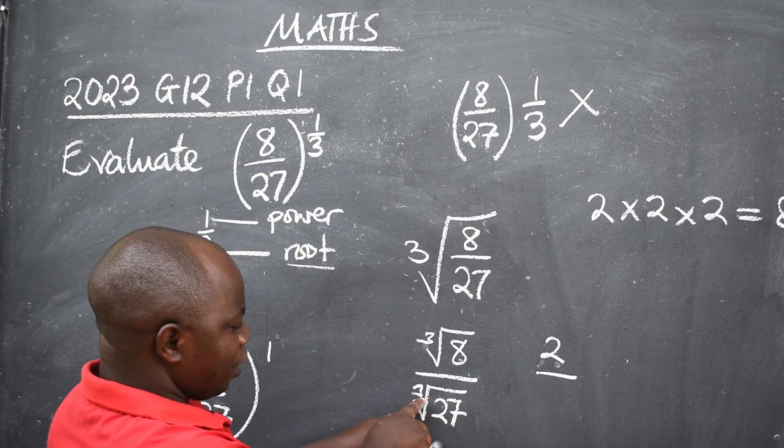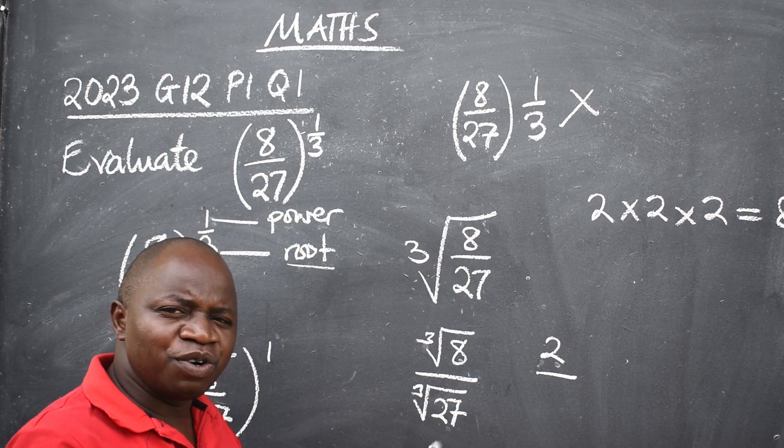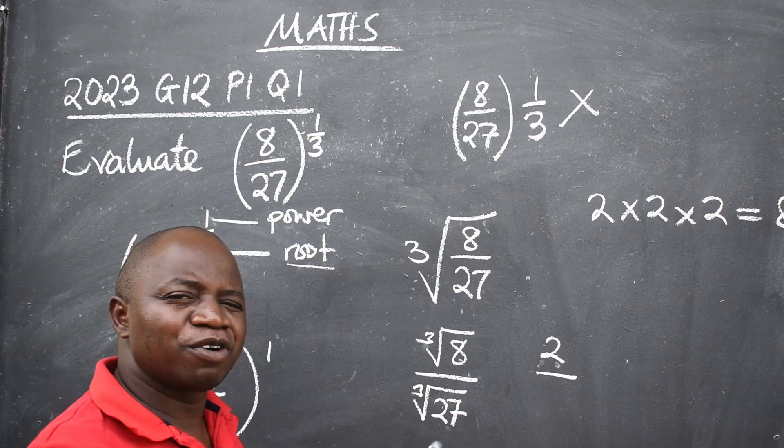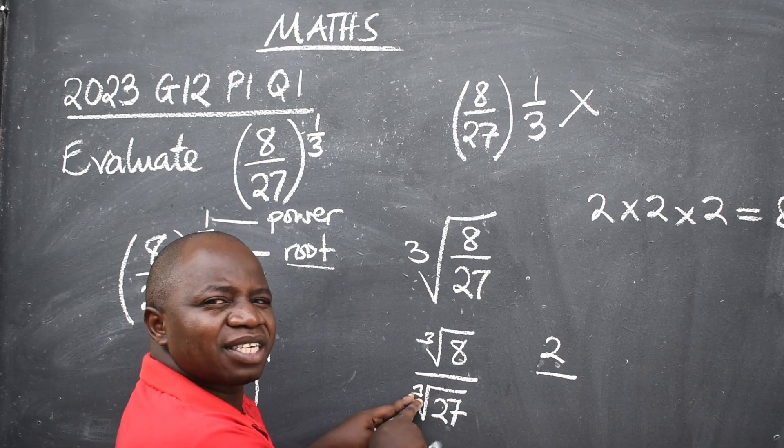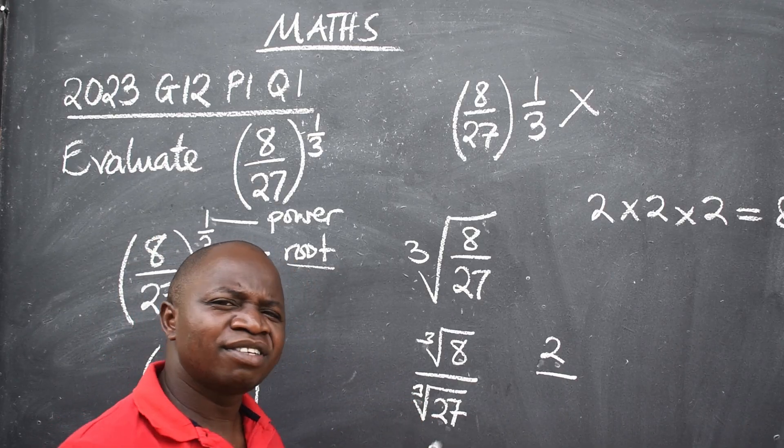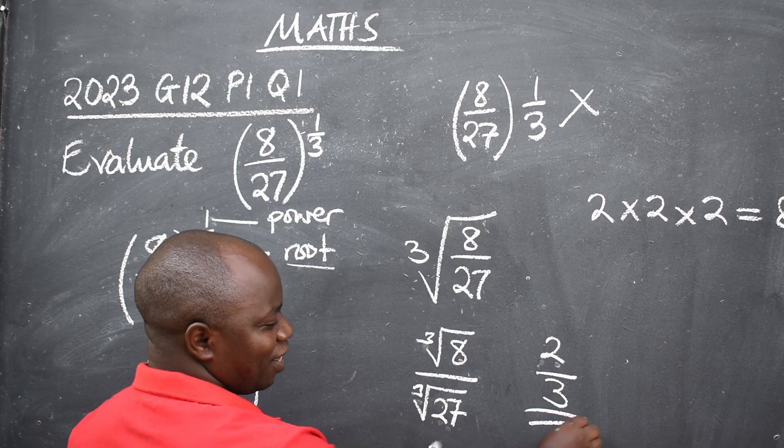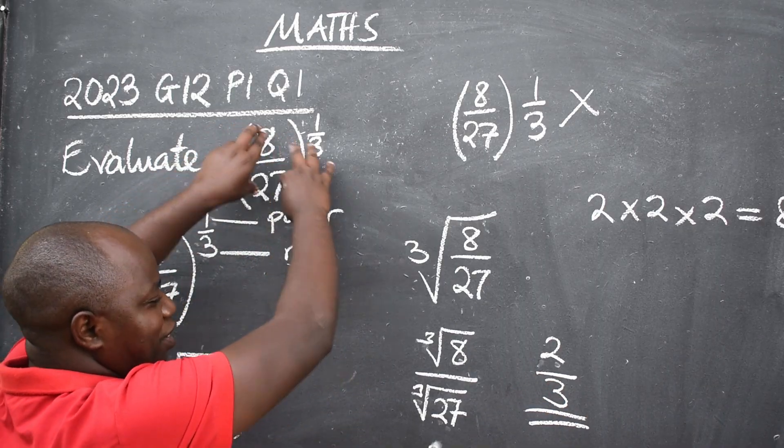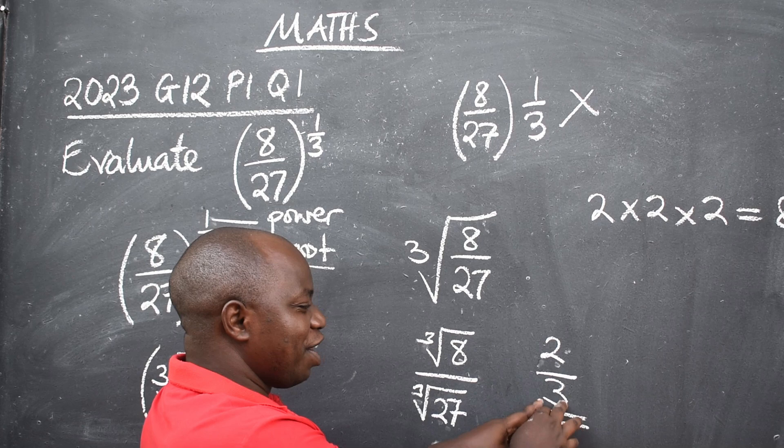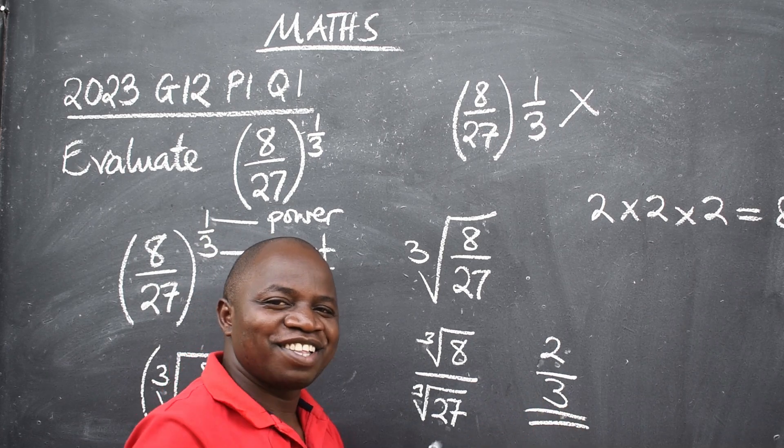Over cube root of 27. Look for a number that you can multiply itself three times. And it should give you 27. What number will be that? 3. Hence the value of this is 2 over 3. Bye bye.